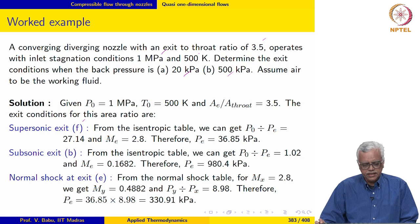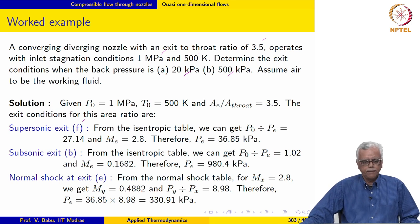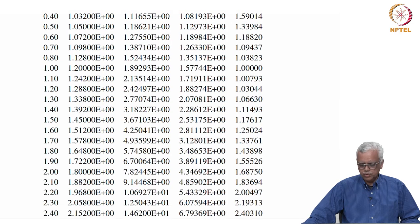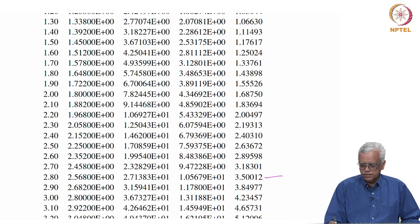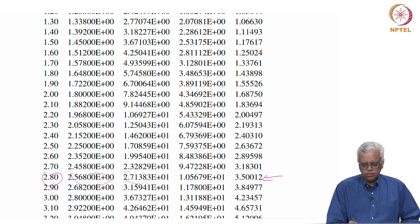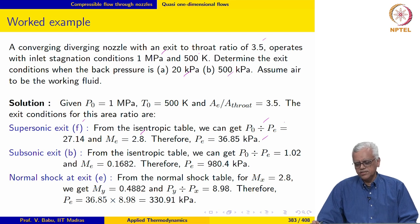Let us first retrieve the value from the isentropic table corresponding to the supersonic exit. For the given area ratio of 3.5 and the supersonic solution, A/A* = 3.5 gives us: exit Mach number is 2.8, and P0/P_e may be retrieved from the table. So the exit pressure for this case is 36.85 kilo Pascal.